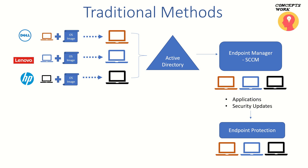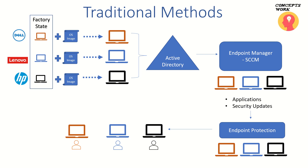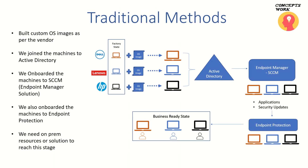This is a typical four-stage process done in every enterprise. Once the device is ready, it can be handed over to the respective users so they can use their corporate ID. In a nutshell, we are transitioning a factory state device into a business ready state device — but multiple steps are involved: building a custom OS image, joining to AD, onboarding to endpoint manager, and then to endpoint protection, all with multiple on-prem resources.